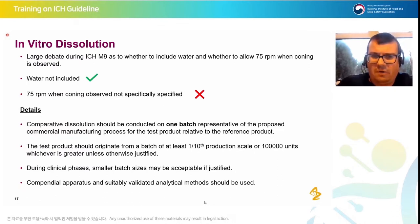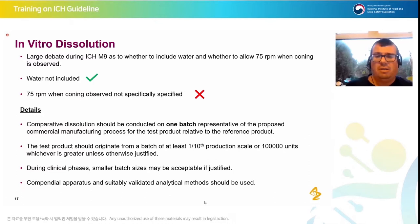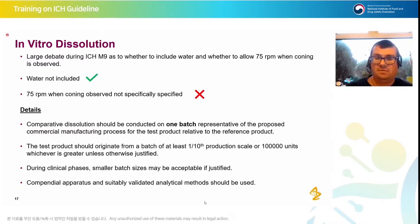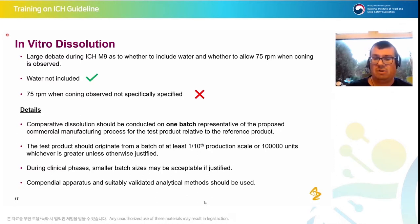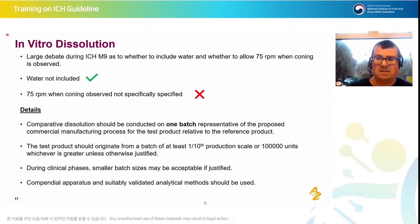Now covering the in vitro dissolution part of the drug product assessment. There were two major debates during ICH M9: whether to include water as a medium, and whether to allow 75 rpm when coning is observed. Water wasn't included — in my personal opinion it doesn't add much and is variable across laboratories. The 75 rpm option wasn't explicitly specified — we'll come back to that. For comparative dissolution, you need one batch representative of the proposed commercial manufacturing process for the test product relative to the reference product.